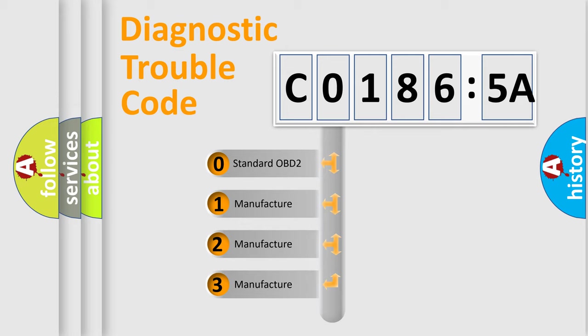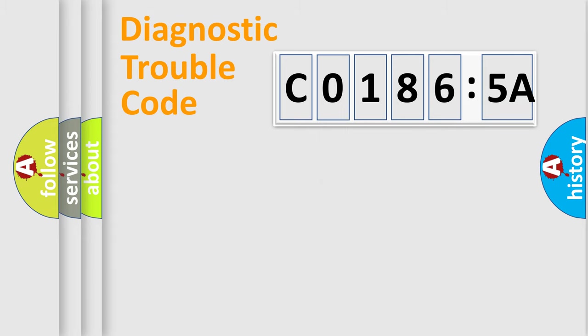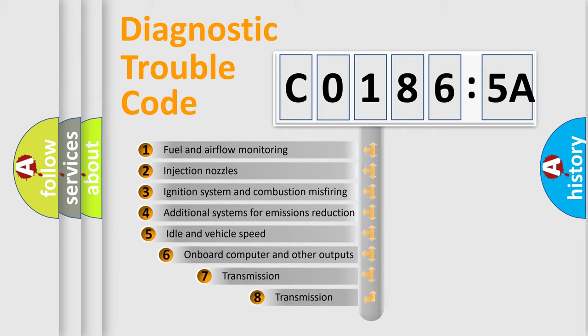If the second character is expressed as 0, it is a standardized error. In the case of numbers 1, 2, or 3, it is a more precise expression of a car-specific error.